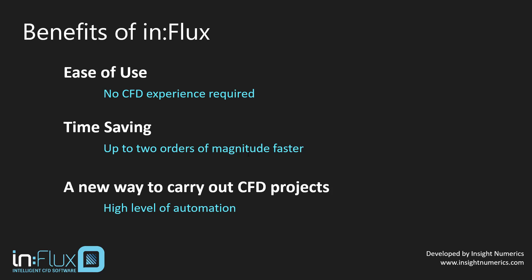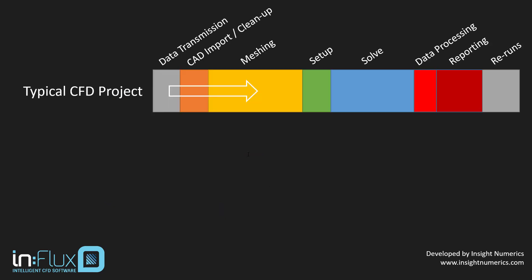Up until now, CFD projects have typically gone through several phases, each requiring its own skillset. These include data transmission, CAD import, meshing, setup of the CFD runs — which often includes writing very complex scripts — and the solution process itself, and then finally the data processing, reporting, and any cleanup or reruns.